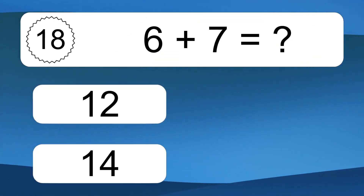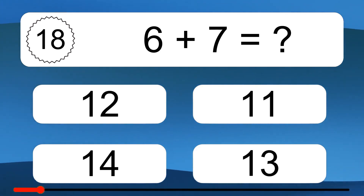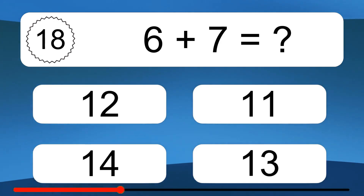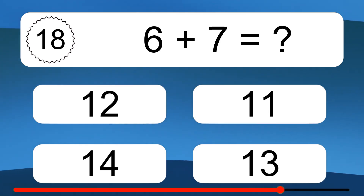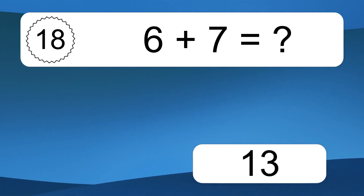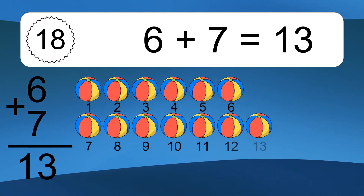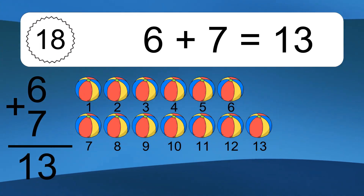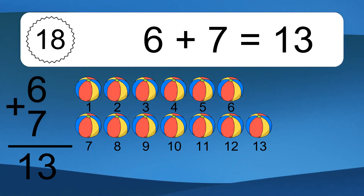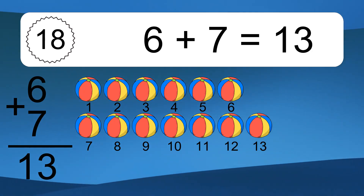6 plus 7 equals what? 6 plus 7 equals 13. Let's count it. 1, 2, 3, 4, 5, 6, 7, 8, 9, 10, 11, 12, 13.